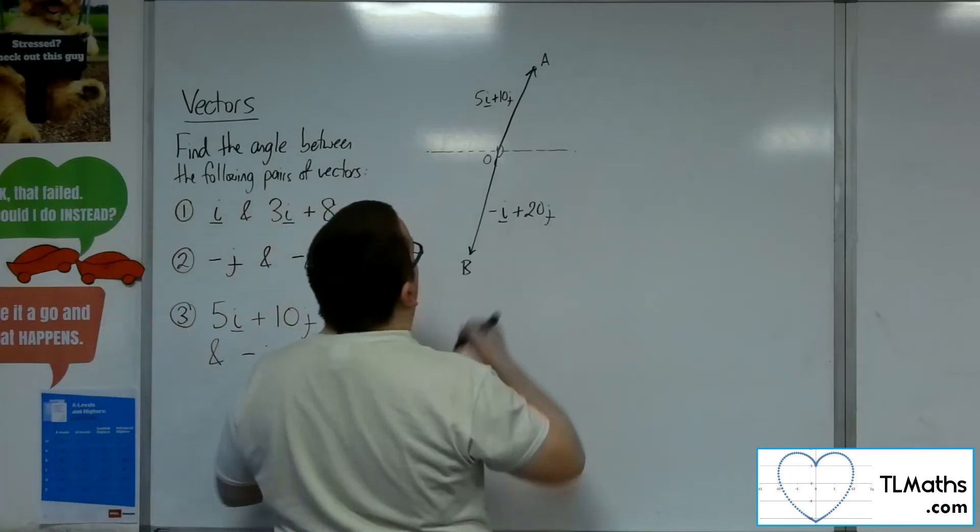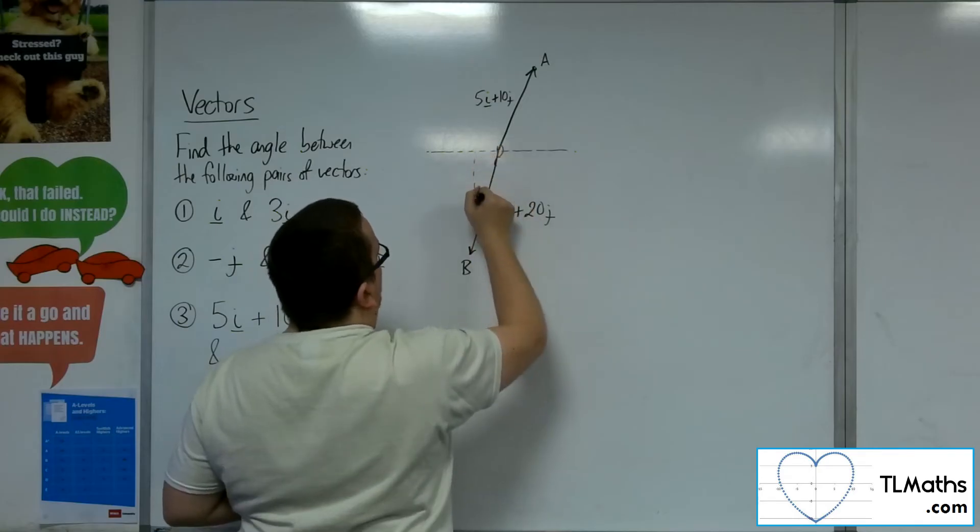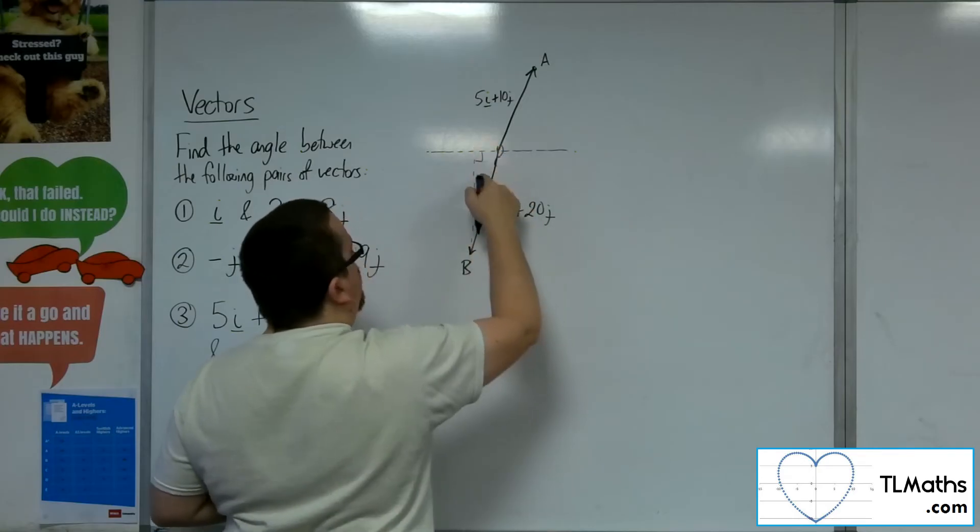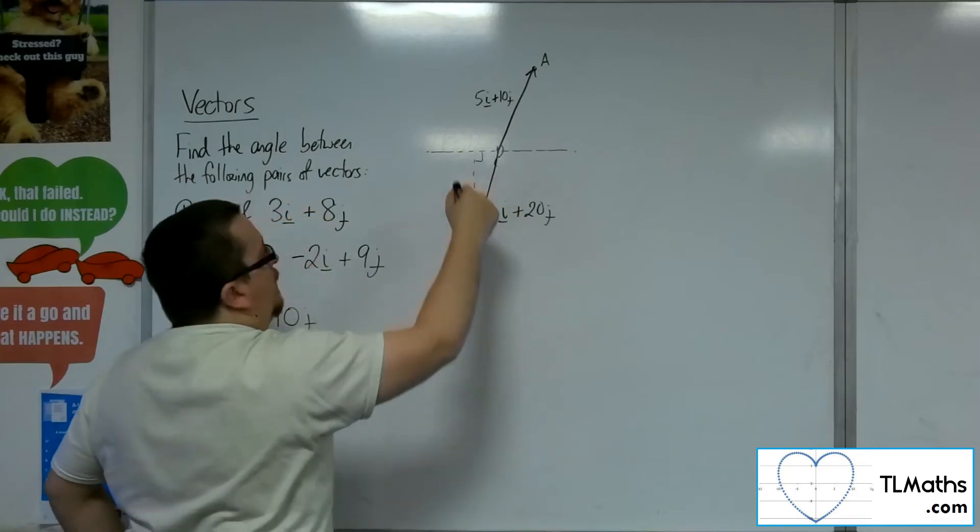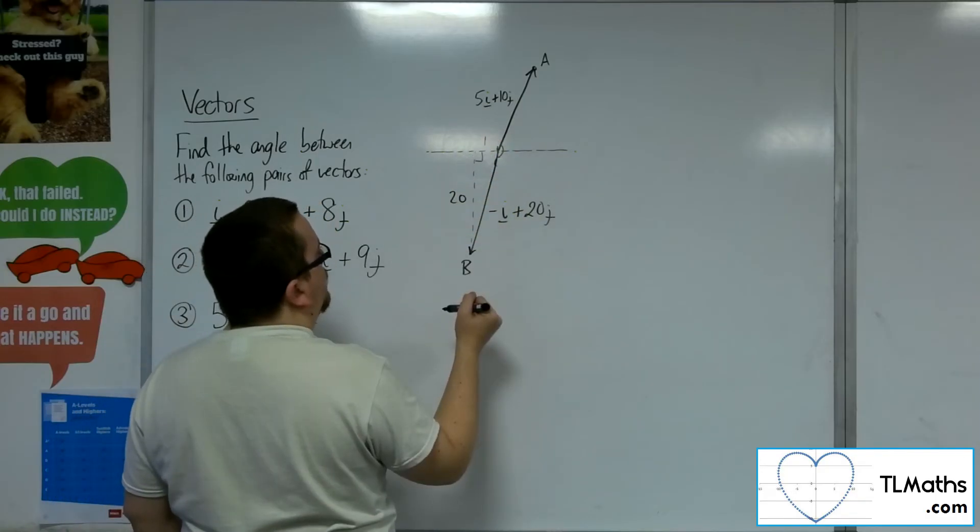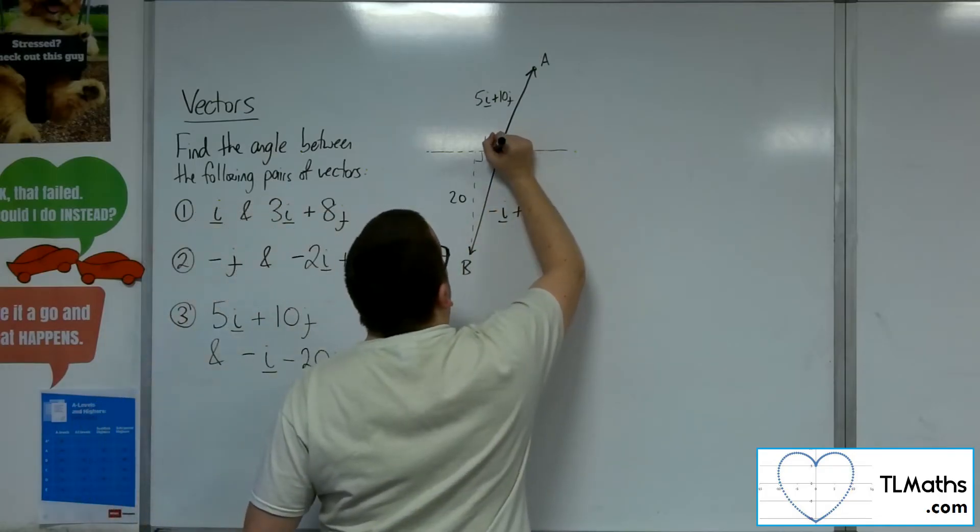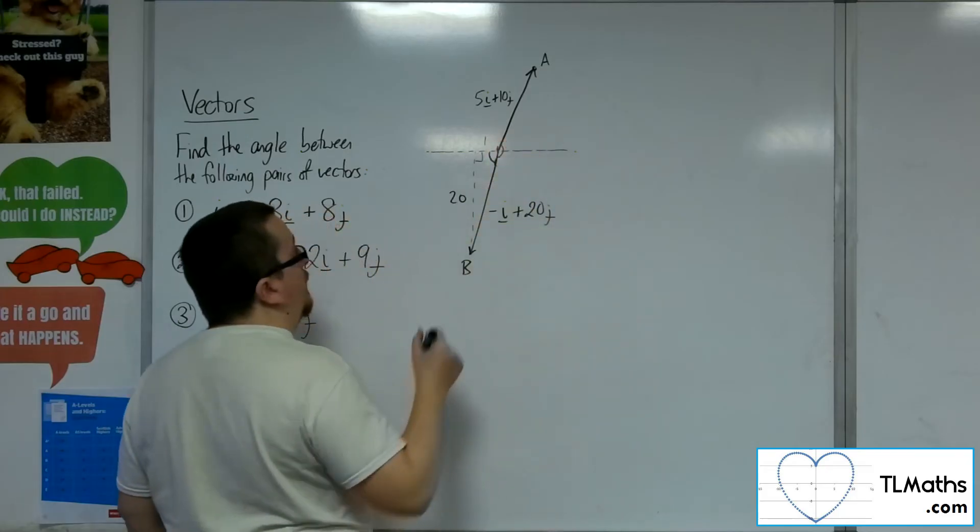Or, probably easier than that, is if I drop the perpendicular here, that gives me a right angle triangle. So that will have length 1 and length 20. Now what I can do there is I can work out this angle.